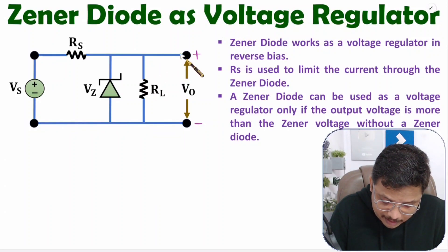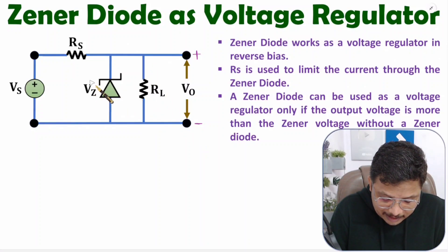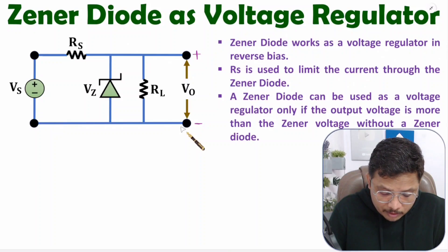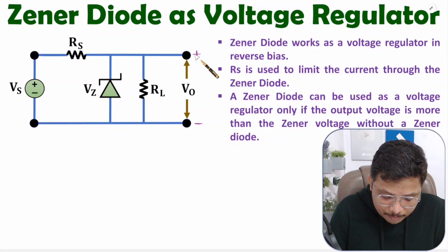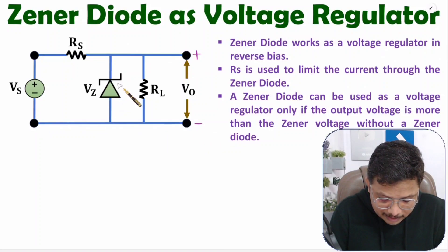If you observe here, we are taking output across load resistance RL. We are connecting this Zener diode in reverse bias. The cathode is connected to the positive terminal of the output, and the anode is connected to the negative terminal of output. So we are connecting this Zener diode in reverse bias across load RL.